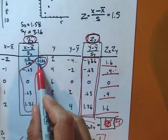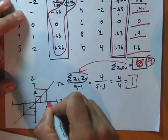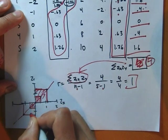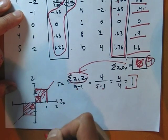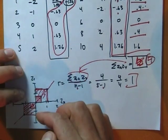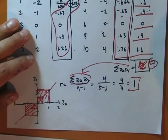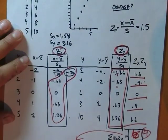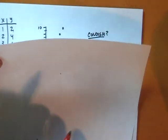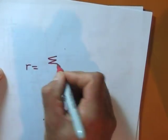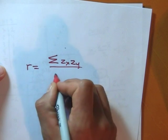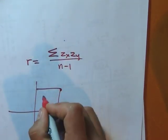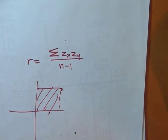The areas were 1.26 × 1.26, 0.63 × 0.63, 0, 0.63 × 0.63, and 1.26 × 1.26. I add those four non-zero areas together to get a sum of 4. Then I apply the formula: r = sum of (zx × zy) divided by (n - 1) = 4 / (5 - 1) = 4/4 = 1. So the r value is 1. That's all you do: convert to z-scores, multiply each pair, sum them all up, and divide by n minus 1.